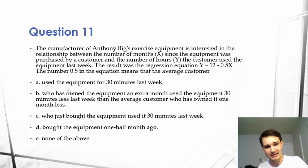A used the equipment for 30 minutes last week, B who had owned the equipment an extra month used the equipment 30 minutes less last week than the average customer who had owned it one month less, C who just bought the equipment and used it 30 minutes last week, D bought the equipment one and a half month ago, or E none of the above.